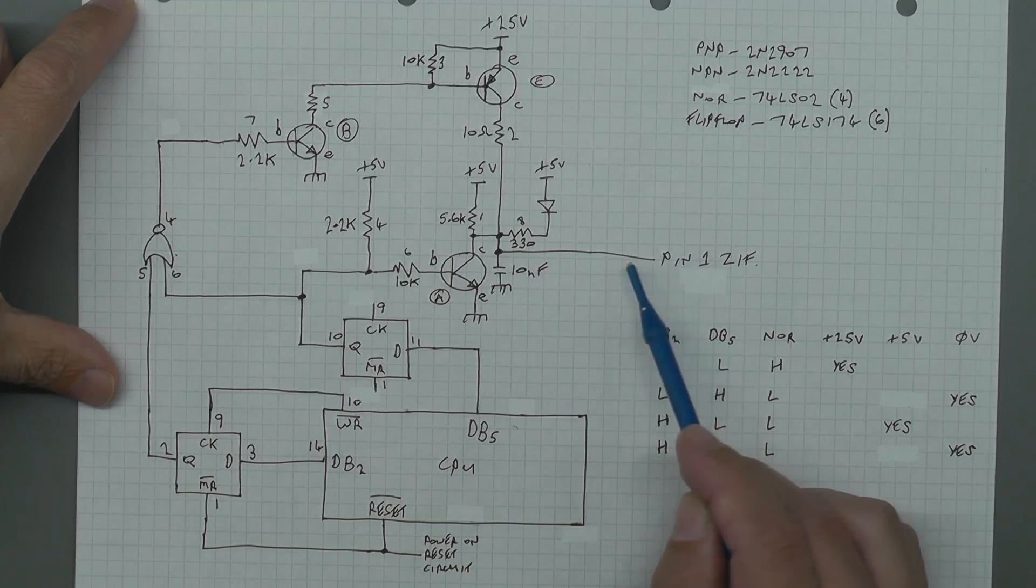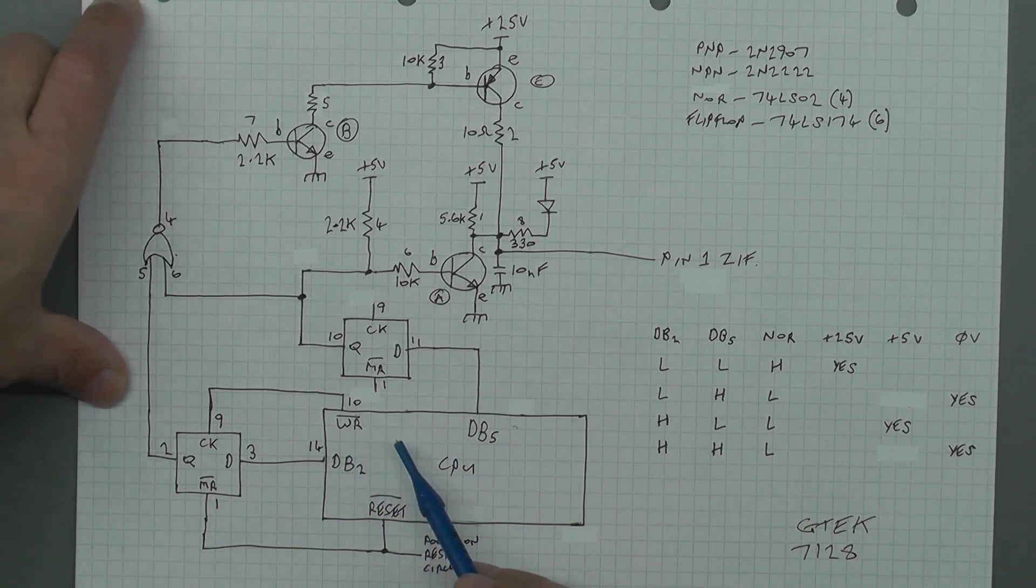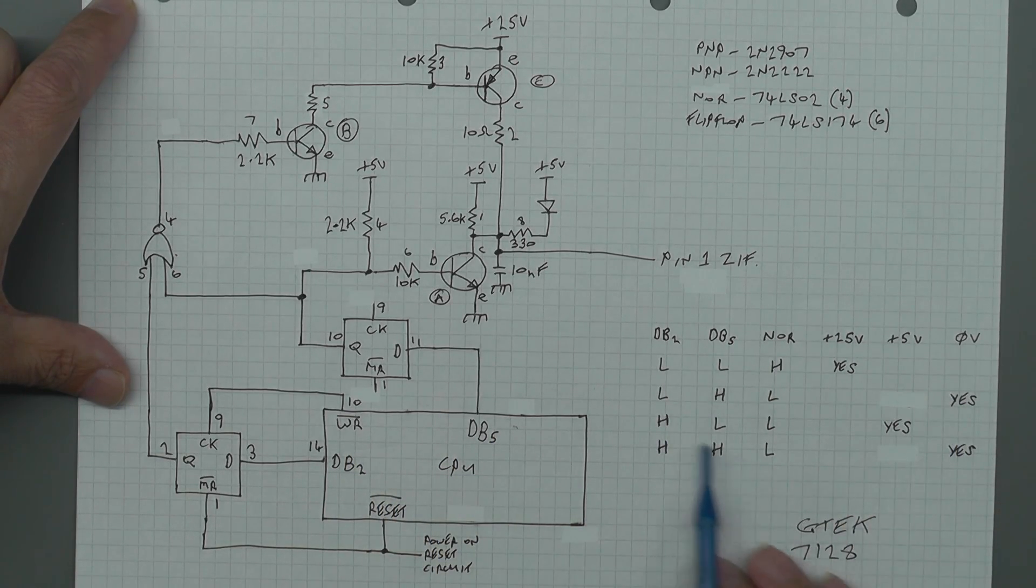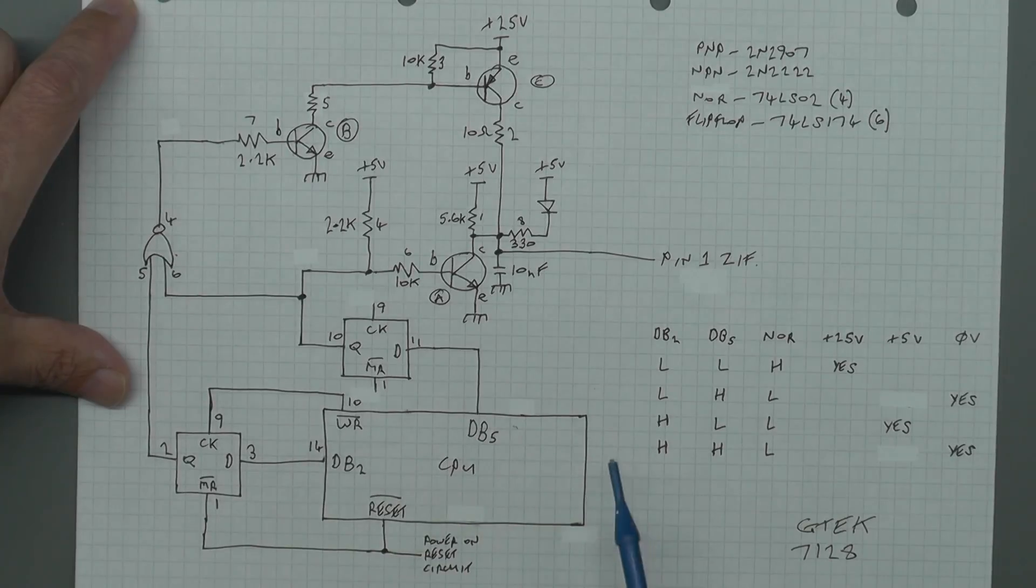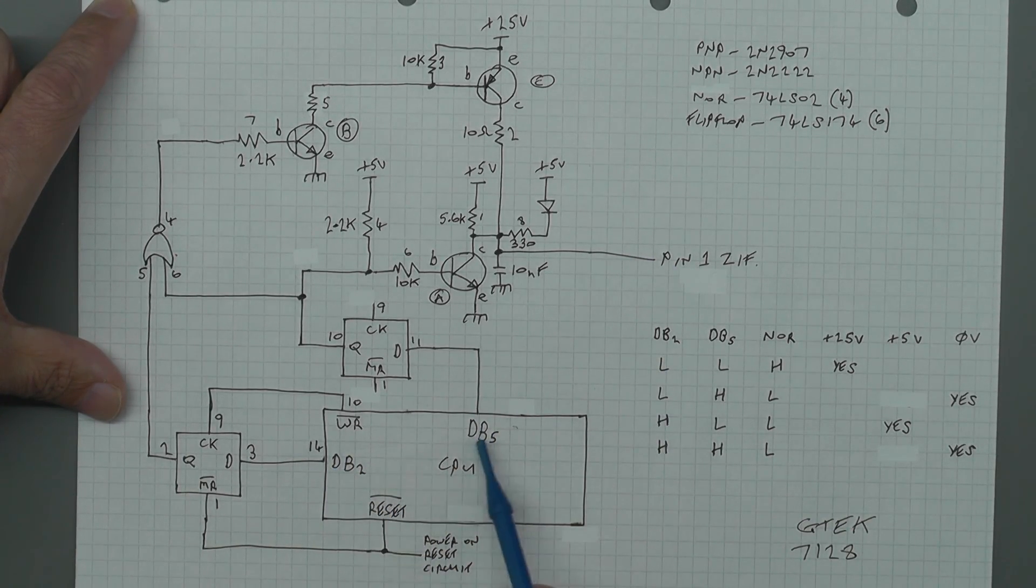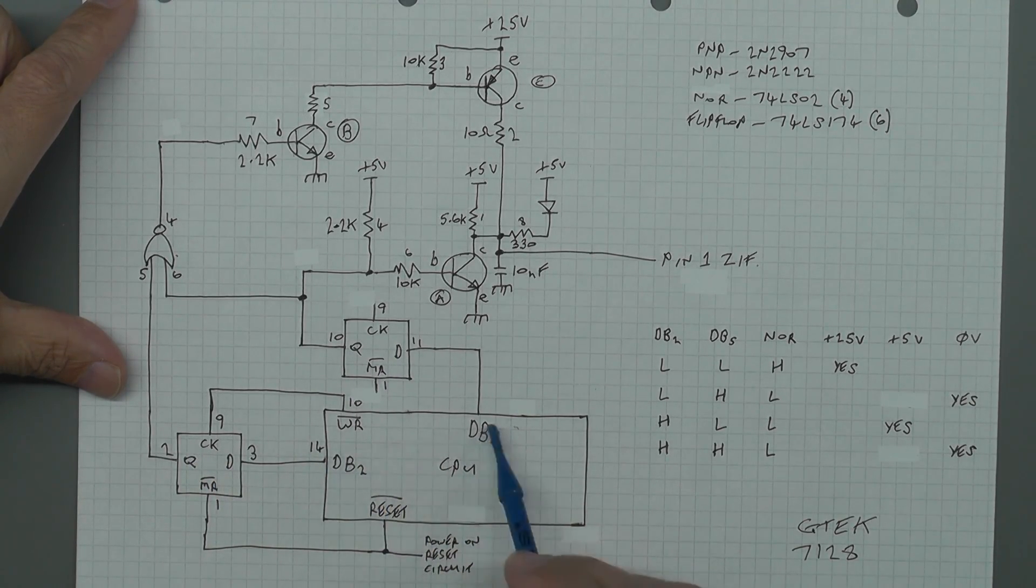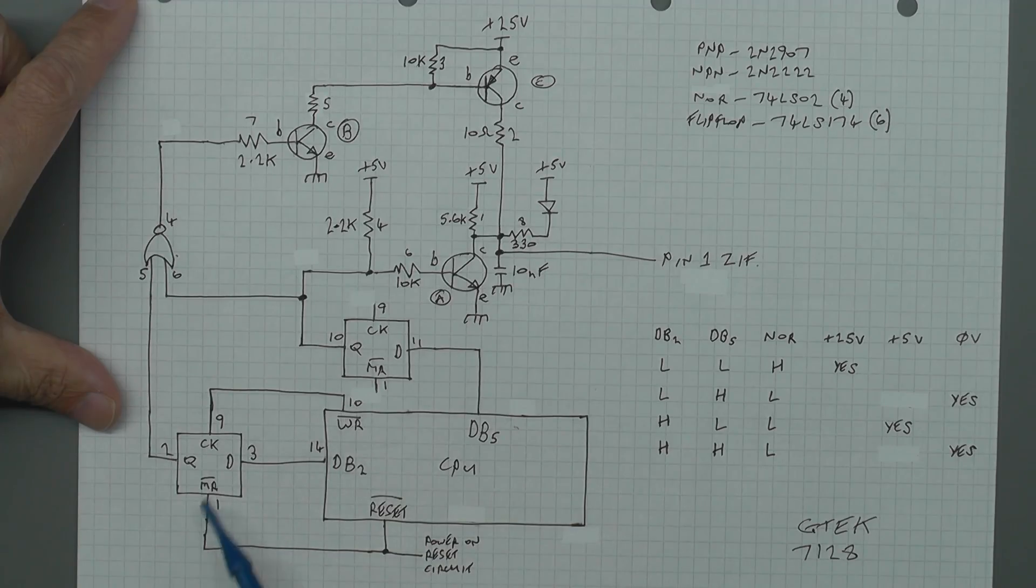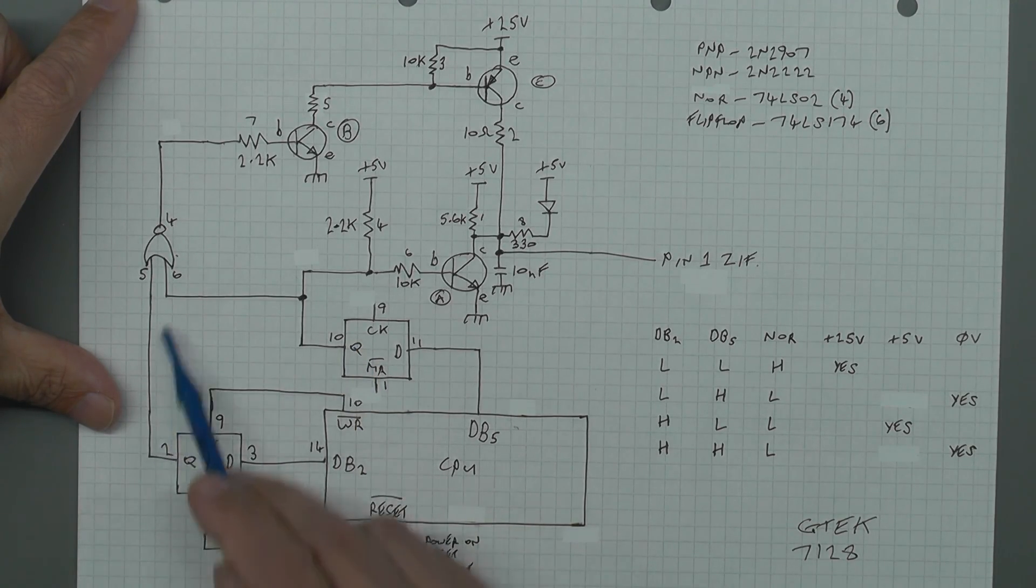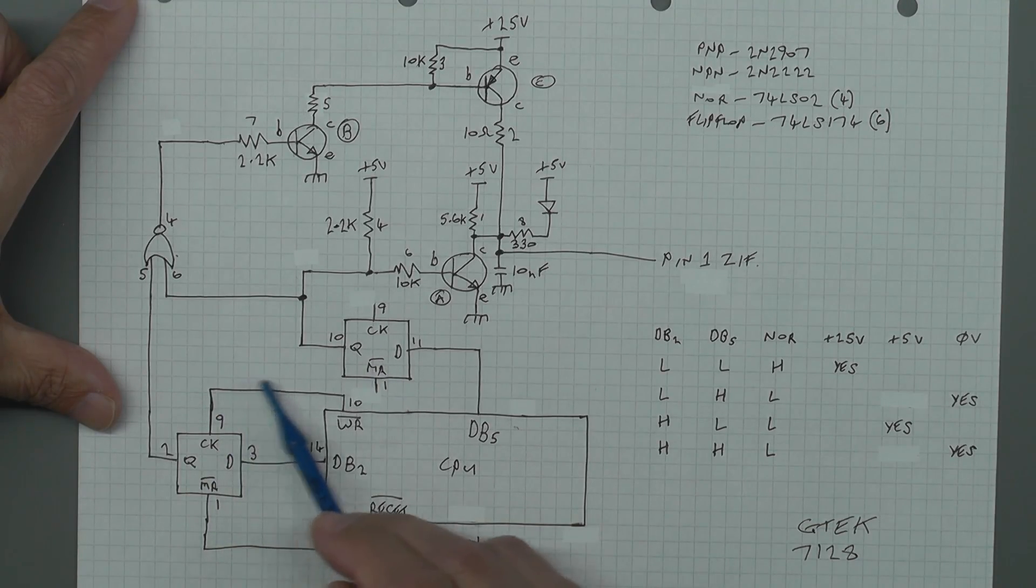So in order to set 25 volts on here requires the manipulation of two outputs from the microprocessor, in this particular case db2 and db5. They're just two bits on one of the eight bit ports. Over on the right hand side I've drawn a little truth table and how it interacts with the rest of the circuit. In order to set the output to 25 volts will require db2 and db5 being set low. Now looking at the D-type flip-flops you can see that db2 and db5 both tie to the D input on both the flip-flops and the Q outputs go to the rest of the circuit.